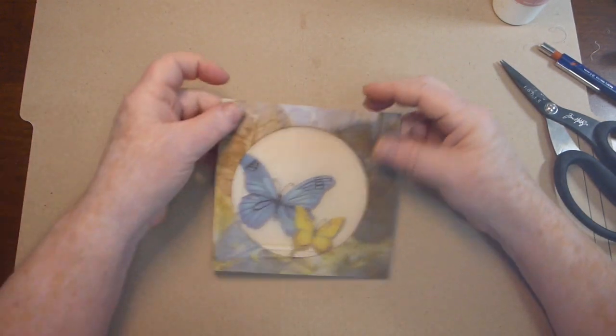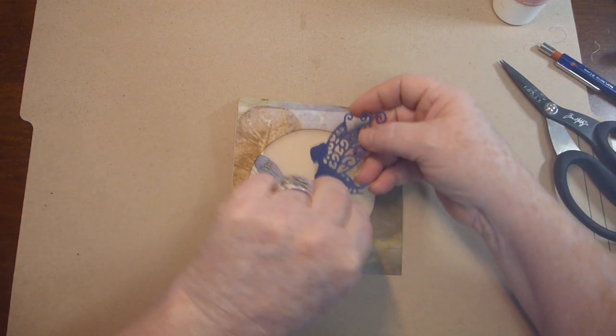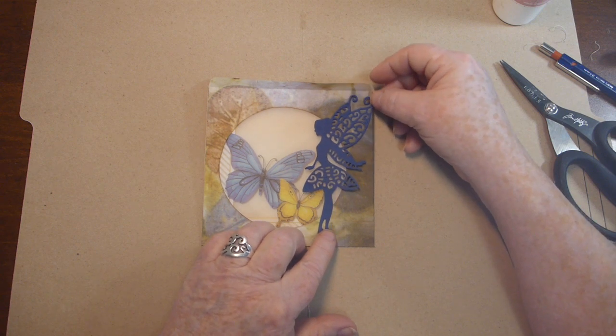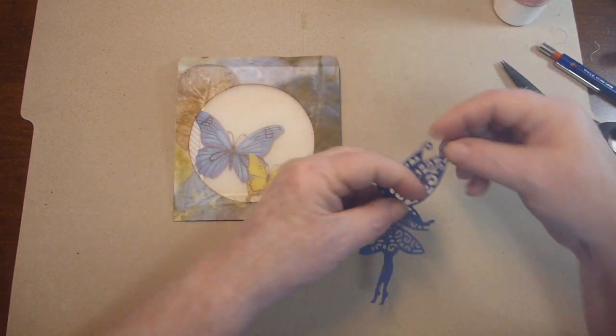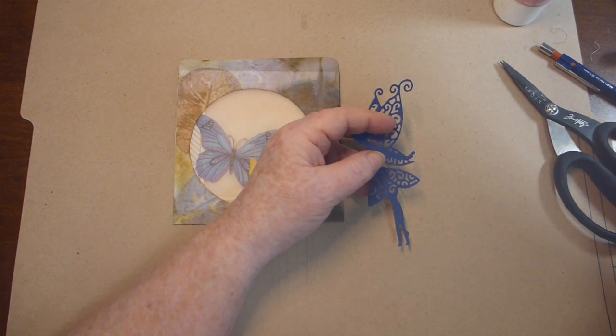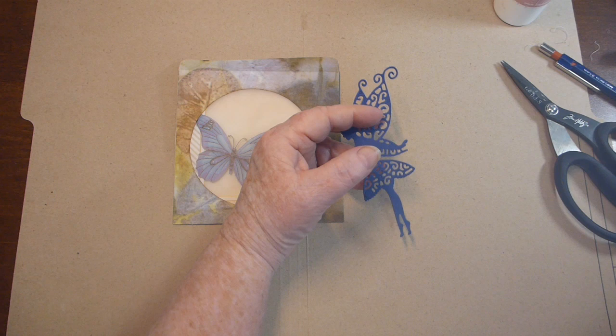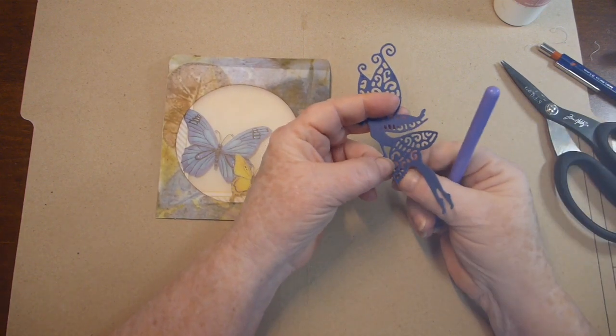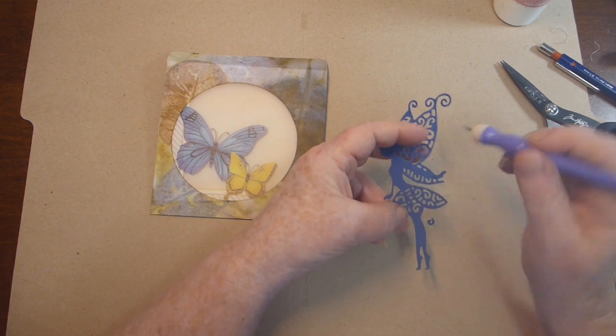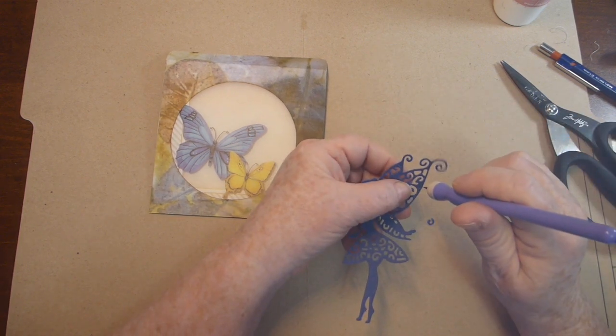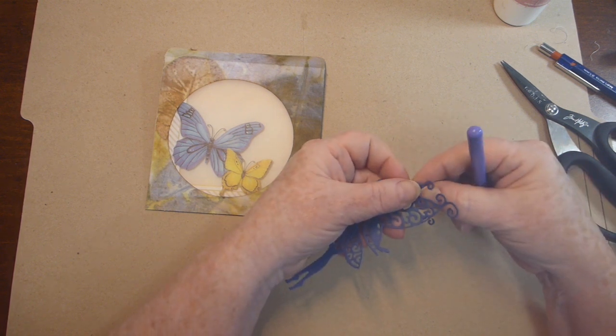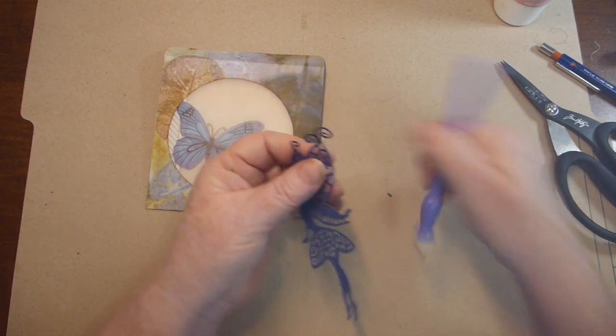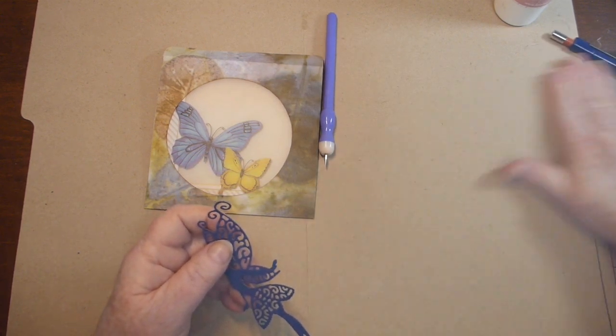So now I happen to have this fairy die cut. And I think she would look very pretty there. So I'm just going to get a little pokey tool and make sure that all these little pieces are out. Okay. Just a couple left in there. Okay.